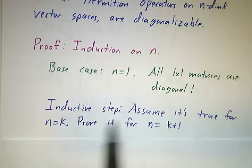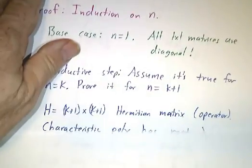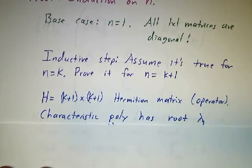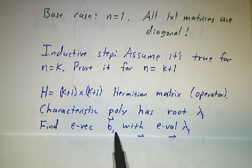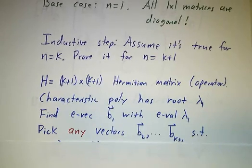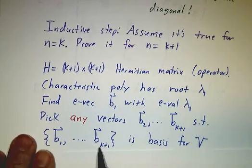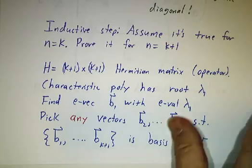Next, we assume it's true for k by k matrices and prove it for k+1 by k+1 matrices. Suppose we have a k+1 by k+1 matrix. Its characteristic polynomial has at least one root, so there's always at least one eigenvalue, and every eigenvalue has at least one eigenvector. Then you can find a basis that extends this eigenvector: pick b₂ so that b₁ and b₂ are linearly independent, b₃ so that b₁, b₂, b₃ are linearly independent, and so on, until b₁ through b_{k+1} is a basis. It's not orthogonal, and only the first vector is an eigenvector, but it's a basis.